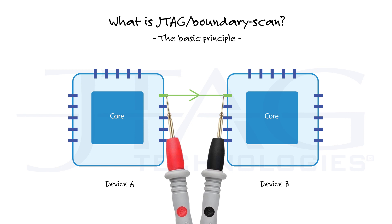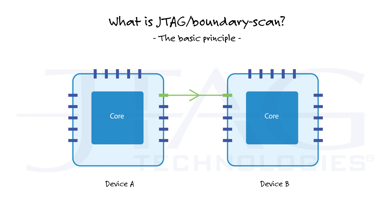The basic idea behind Boundary Scan is that with internal cells you don't need external probing access. If you can drive the output pin of device A using a built-in drive cell, and read the result on the input pin of device B with a built-in sense cell, you can perform the desired test. These drive and sense cells should be independent of the functionality of the device.